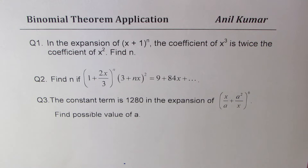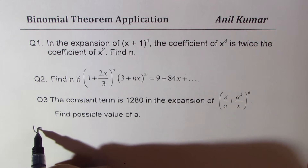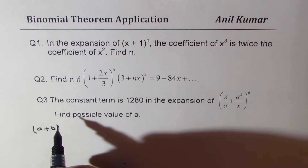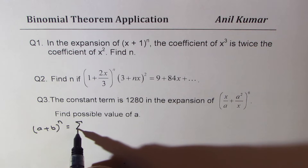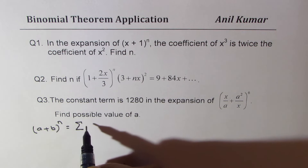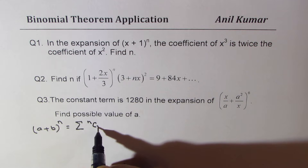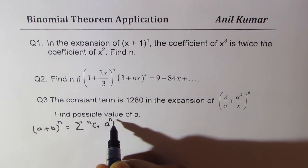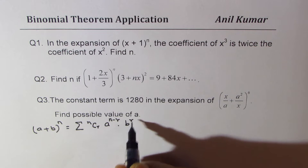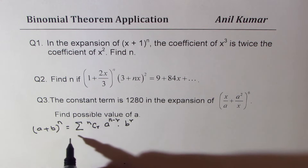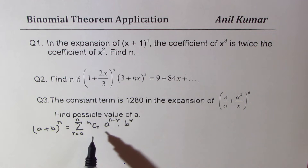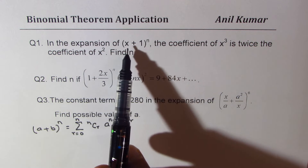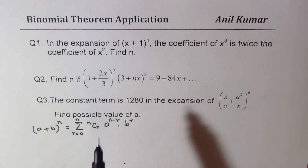I hope you remember the expansion of the binomial theorem. If it is (a + b) to the power of n, it can be written as the sum using the combination nCr, a to the power of n minus r, times b to the power of r, where r goes from 0 to n. So these coefficients nCr — if you have an expression like x + 1, the coefficient will be nCr.